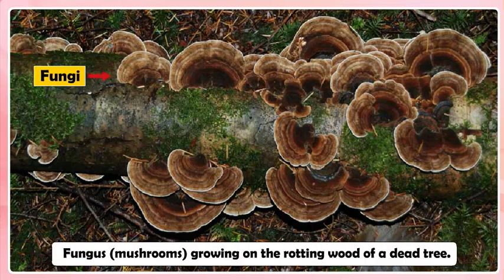Saprophytic plants like fungi secrete digestive juices on the dead and decaying organic matter and convert it into a solution. They then absorb the nutrients from this solution. This mode of nutrition, in which plants take in nutrients from dead and decaying organic matter, is called saprophytic nutrition.